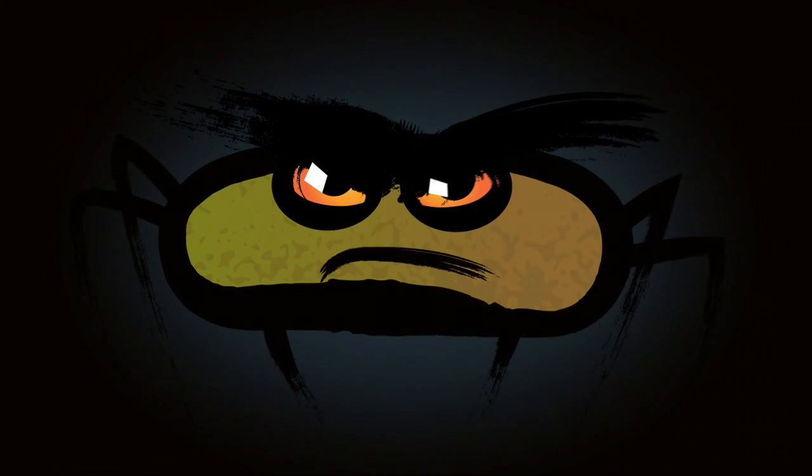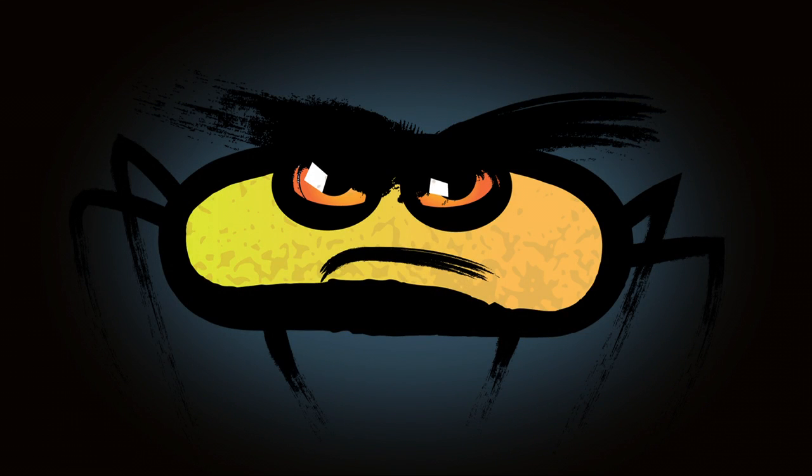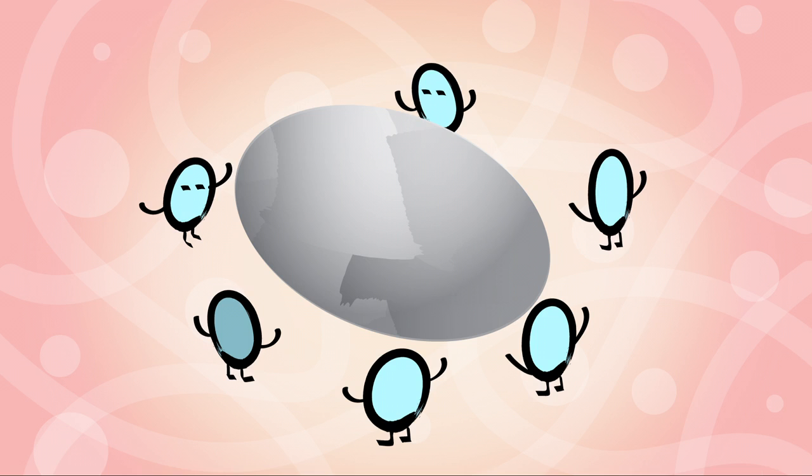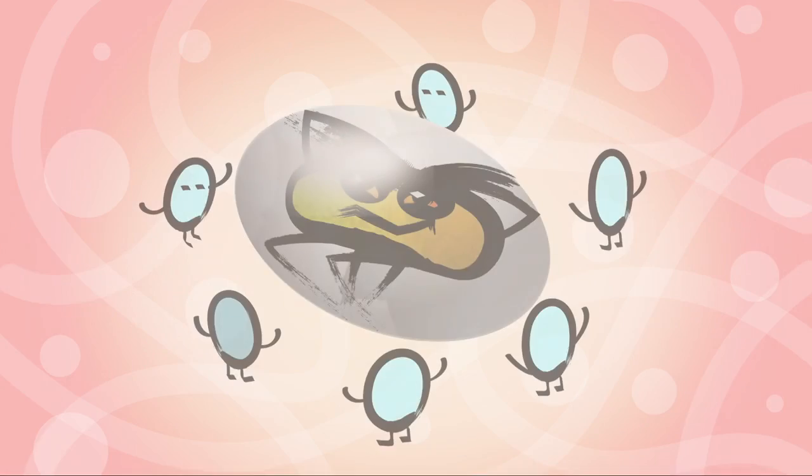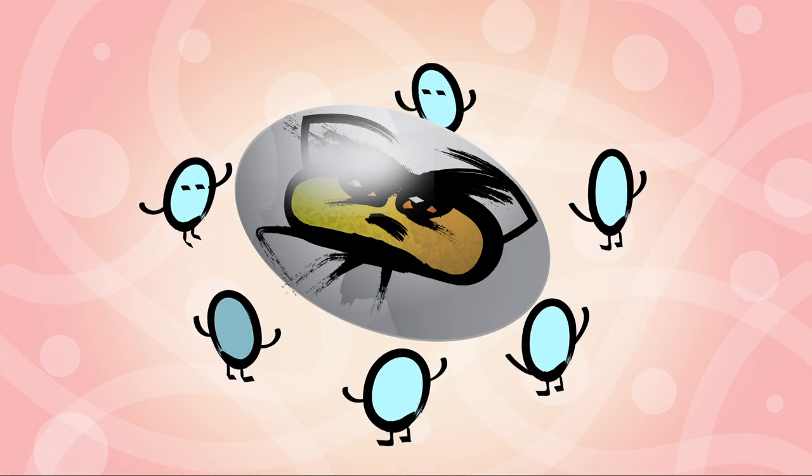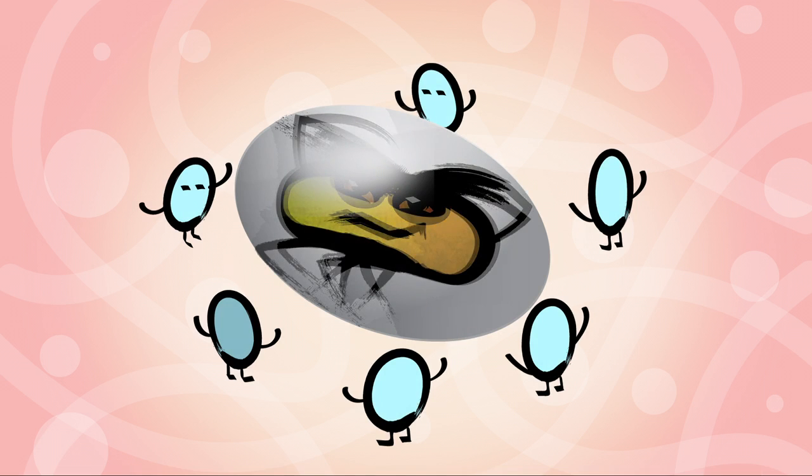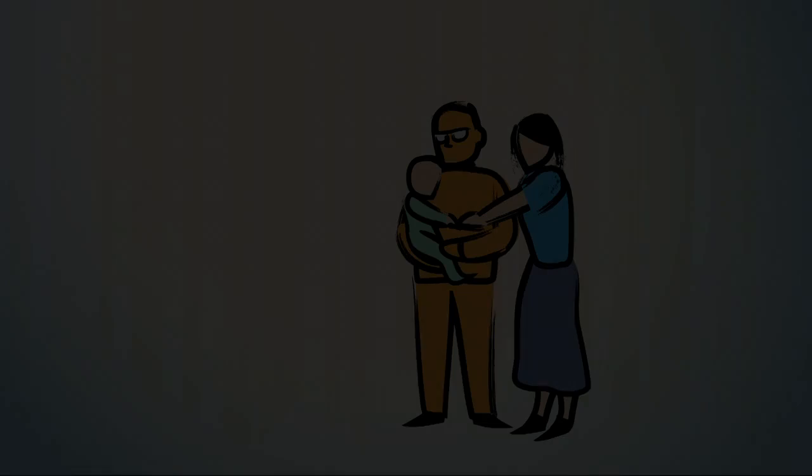TB germs can hide in your body without you even knowing. Often they trick the immune system into building a calcium shell that surrounds the germs instead of killing them. As long as the calcium shell is strong, the TB germs can't get out. They go to sleep and lie and wait for just the right moment to wake up and make you sick.